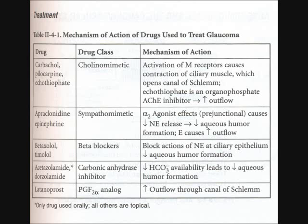Another drug type is acetazolamide and dorzolamide. These drugs are carbonic anhydrase inhibitors. What they do is cause a decrease in bicarbonate availability. When you decrease bicarbonate, it decreases aqueous humor formation, which relieves glaucoma and the blockade of aqueous humor.